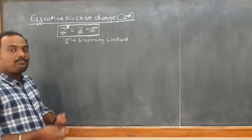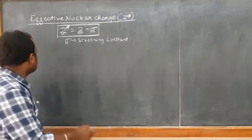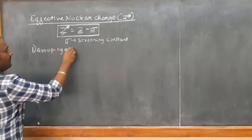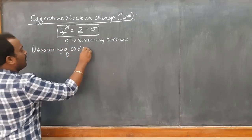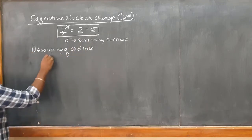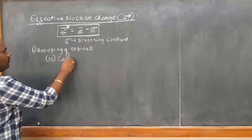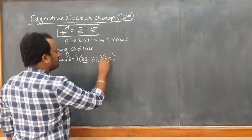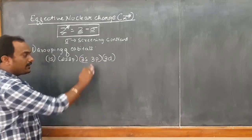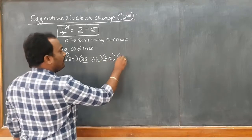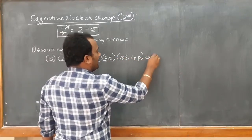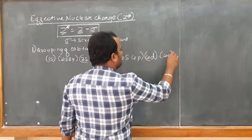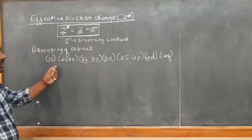To calculate sigma, we first need grouping of orbitals — this is very important. We group: 1s separately; 2s and 2p separately; 3s and 3p separately; 3d separate; then 4s and 4p; then 4d; then 4f. Like this, we go on grouping the orbitals.